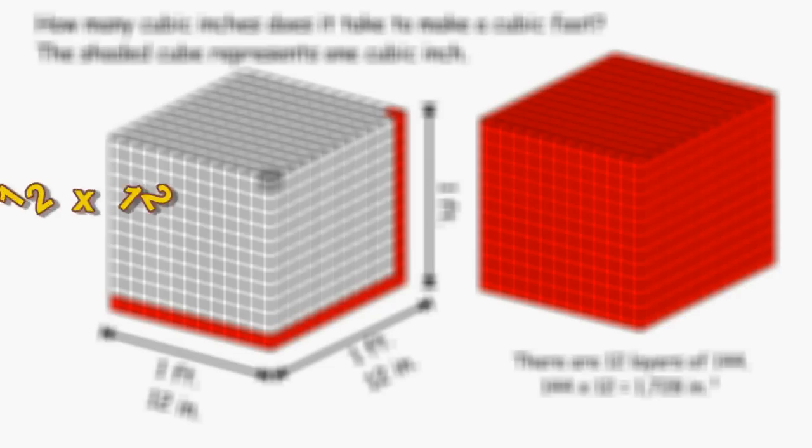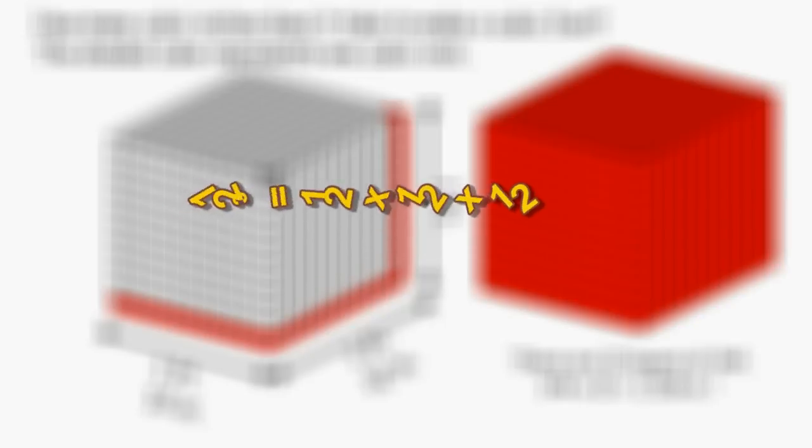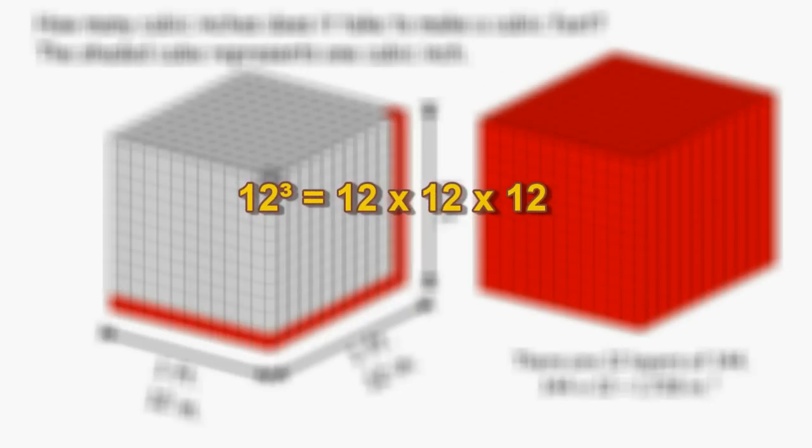So to figure out how many cubic inches there are in one cubic foot, what we really had to do was take 12 and raise it to the third power, or 12 times 12 times 12.